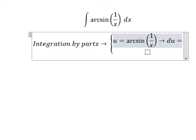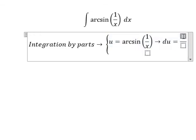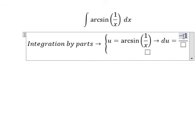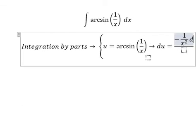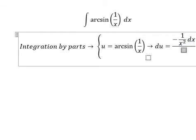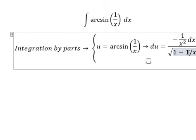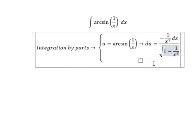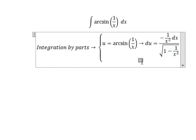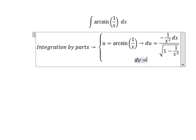For du, we get negative 1 over x squared dx divided by the square root of 1 minus 1 over x squared. Next, dv equals dx, so v equals x.